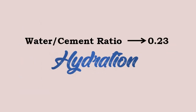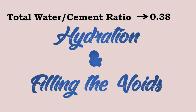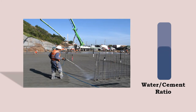Cement requires a water-cement ratio of about 0.23 for hydration and a water-cement ratio of 0.15 for filling the voids in the gel pores. In total, a water-cement ratio of 0.38 is required for hydration and filling the voids in the gel pores. But in practice, a higher water-cement ratio is required as concrete is open to the atmosphere and the water used in the concrete evaporates.